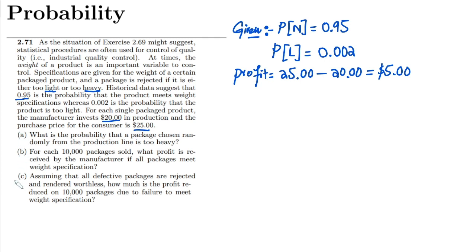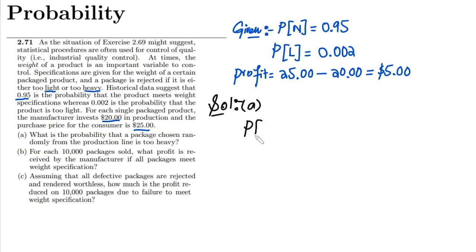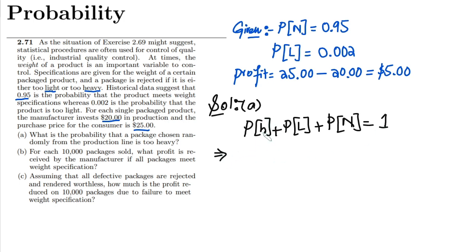There are three parts to this question. In part A, what is the probability that a package chosen randomly from the production line is too heavy? We know the probability of a normal package is 0.95 and the probability of too light is 0.002, but we don't know the probability of too heavy. So, P(H) + P(L) + P(N) is always equal to 1.